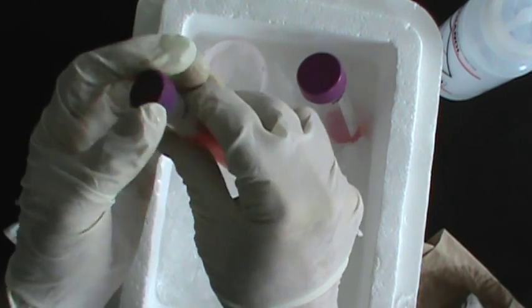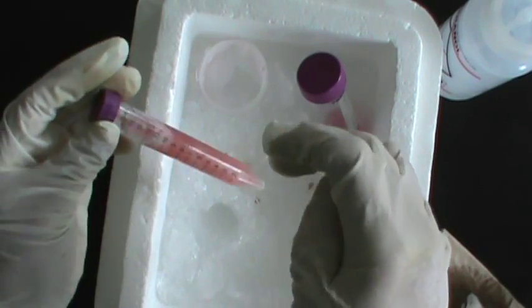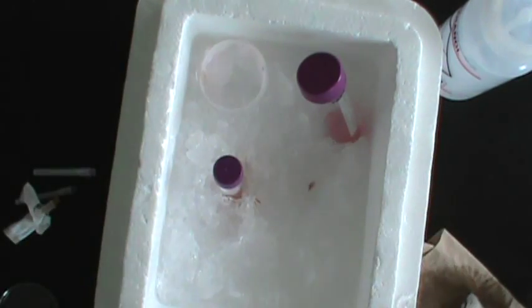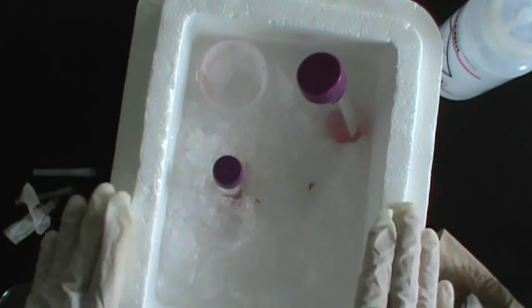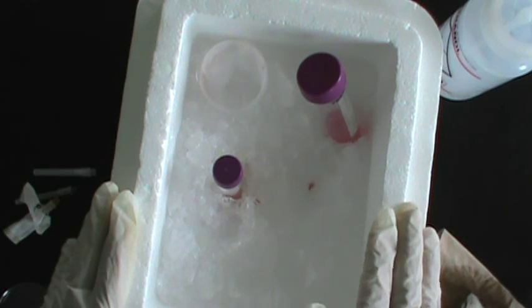At this point in time, we should have a single cell suspension of spleen cells in our culture medium in our 15 milliliter centrifuge tube. So now we're ready to continue with the next phase of the preparation of these spleen cells, which is centrifuging these cells and washing them and getting them ready for culture.